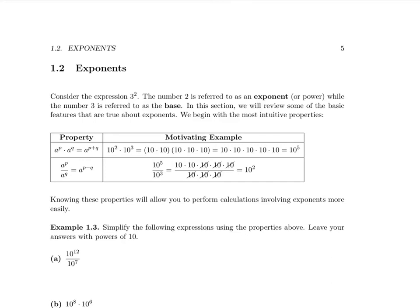Section 1.2: Exponents. Large and small numbers are frequently represented with powers of 10. For example, the number 9.8 billion is often written 9.8 times 10 to the 9. This is an example of a power of 10. In order to do mathematics with large and small numbers, you will find it very helpful to know a few facts about exponents. Hence, we review some basic properties of exponents in this section.